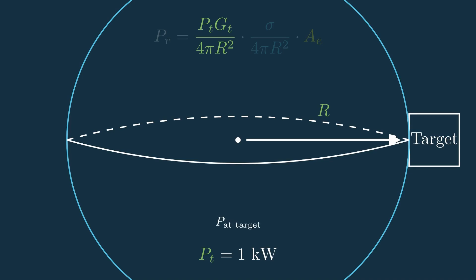So we can say that the amount of power that actually reaches the target is the transmit power over the sphere's surface area, or in other words, PT over 4π R squared, where the 4π R squared is that sphere surface area.